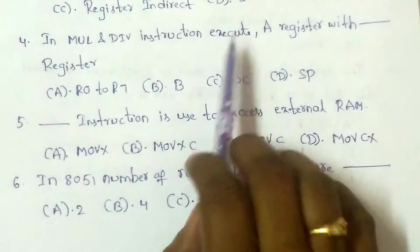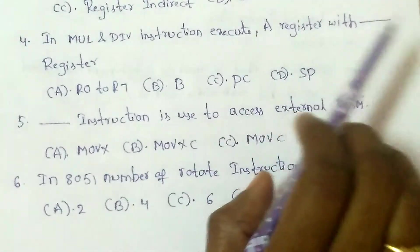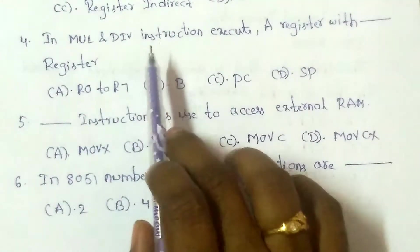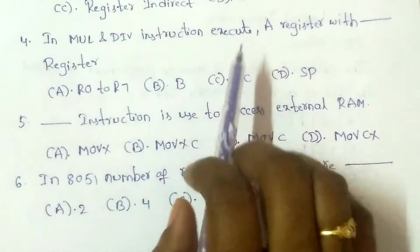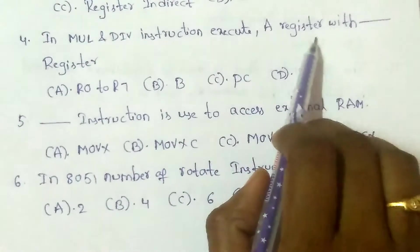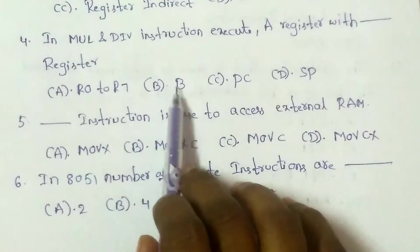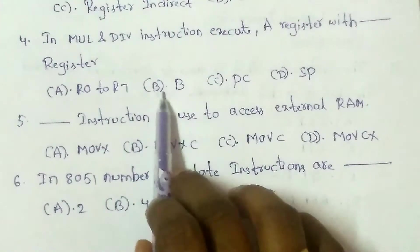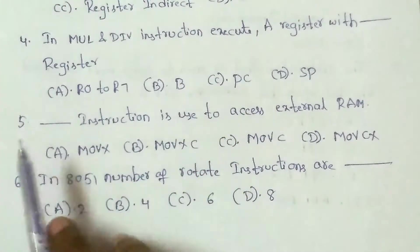Next question: In MUL and DIV, the multiplication and division instructions execute using the accumulator register and which other register? The answer is option B: register B. Multiplication and division instructions use the accumulator and register B.